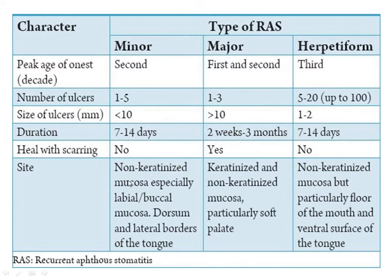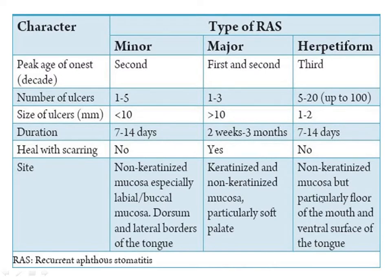Regarding healing with scarring: minor — no scar; major — scar present; herpetiform — no scar. The site is also specific. Minor ulcers occur only in non-keratinized mucosa, especially labial or buccal mucosa, dorsum and lateral borders of the tongue. Major aphthous ulcers occur in keratinized as well as non-keratinized mucosa, including the gingiva and particularly the soft palate. Herpetiform is similar to minor — non-keratinized mucosa — but particularly the floor of the mouth and ventral surface of the tongue.